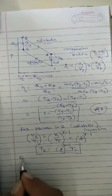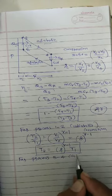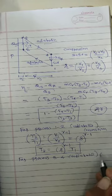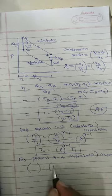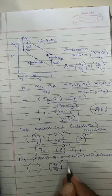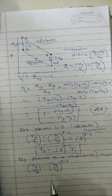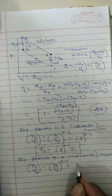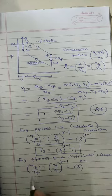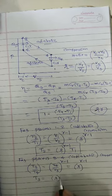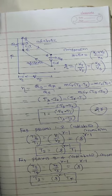Similarly, for process 3 to 4, which is also adiabatic, we can write T3/T4 = (V4/V3)^(γ−1). Since V4/V3 is also the compression ratio R, we get T3 = R^(γ−1) · T4.